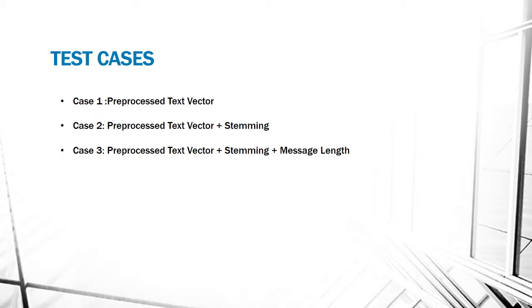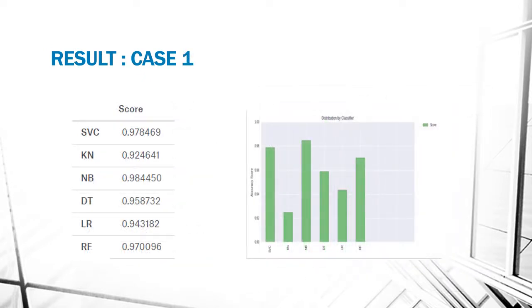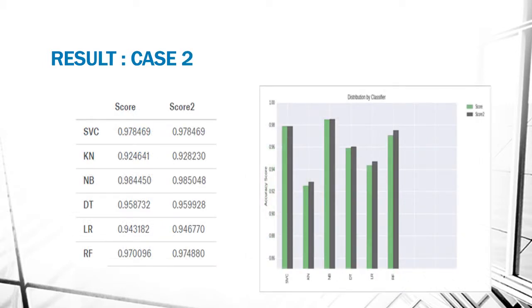The results of the first case show clearly that naive Bayes is performing well with 0.98 accuracy, followed by SVC and random forest. The other classifiers are not performing that well. In the second case with stemming, naive Bayes has improved its performance from 0.984 to 0.985. There is improvement in random forest but it's still less than naive Bayes.